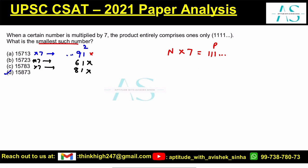So ideally the correct answer is the last one. We can check. 15873 into 7. 7 times 3 is 21. 2 forward, 7 times 7 is 49 and 2, 51. Then we have 8 times 7 is 56, and 5, 61. 6 carry forward, 5 times 7 is 35 and 6 is 41, 4 carried forward. And then we have 1 times 7 plus 4, 11.